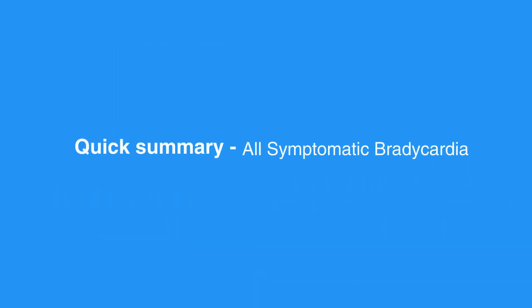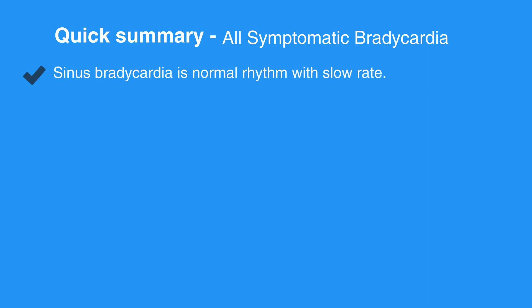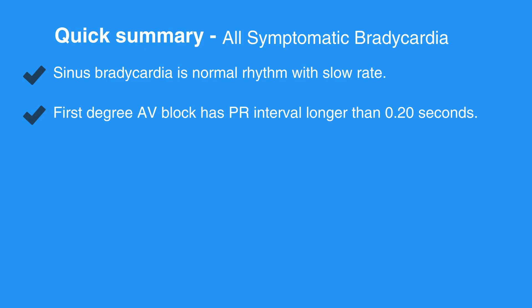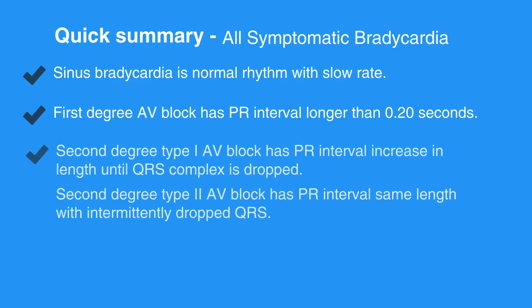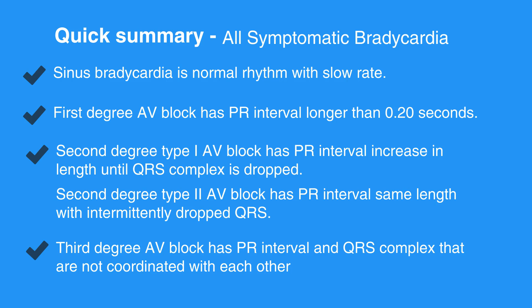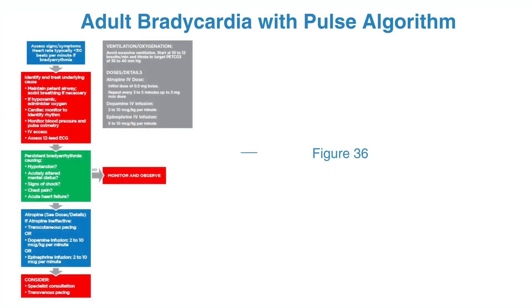Here is a quick summary of all the symptomatic bradycardias. Sinus bradycardia is a normal rhythm with a slow rate. First degree AV block has a PR interval longer than 0.20 seconds. Second degree type 1 AV block has a PR interval that increases in length until a QRS complex is dropped. Second degree type 2 AV block has a PR interval of the same length with intermittently dropped QRS complexes. Third degree AV block has a PR interval and QRS complex that are not coordinated with each other. For the adult bradycardia with pulse algorithm, refer to figure 36 in your corresponding ACLS manual.